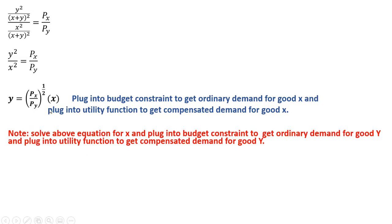On the other hand, if we solve that equation for X and plug into the budget constraint, we get the ordinary demand for good Y. And if we plug that equation into the utility function, we get the compensated demand for good Y.